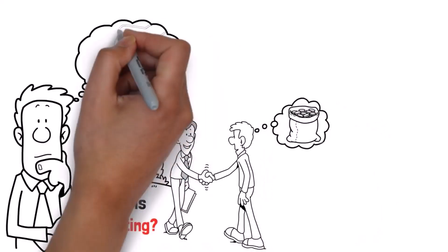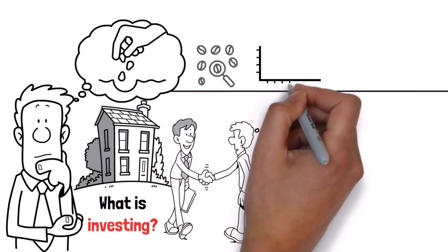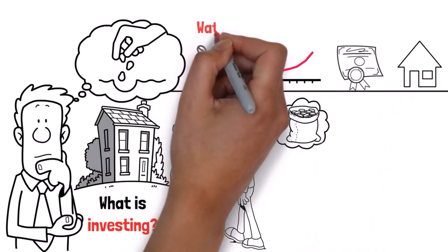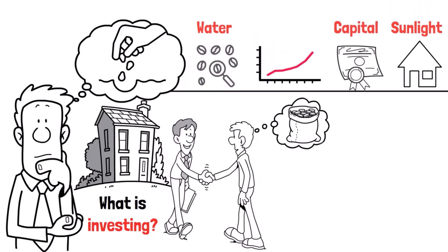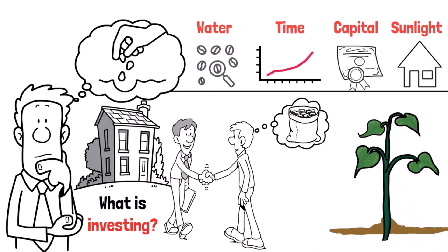You carefully select the right seeds - stocks, bonds, real estate - and nurture them with water, capital, sunlight, and time. And just like a garden needs time to grow, investments need time to flourish.